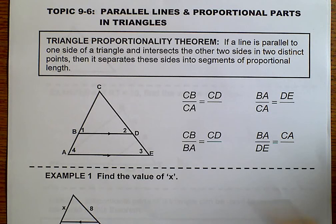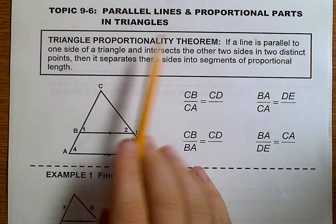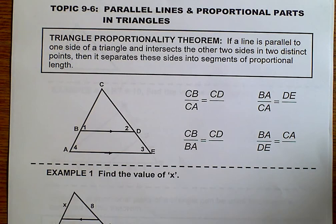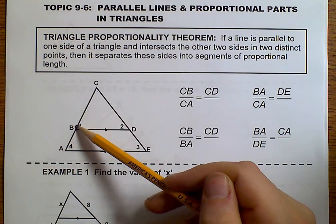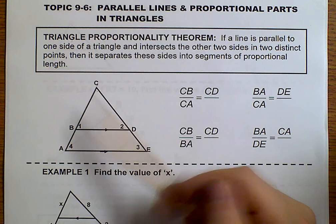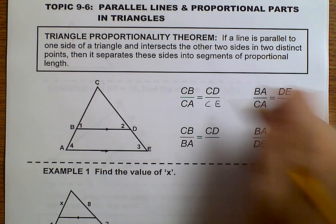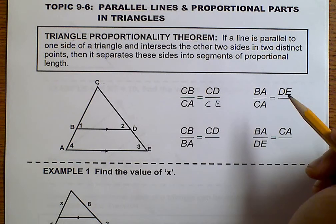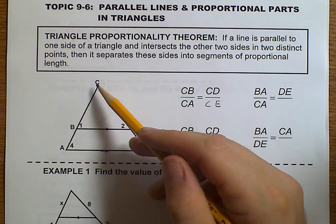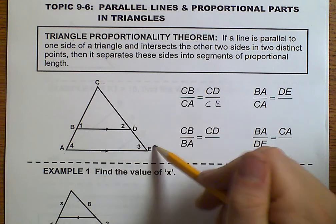We have a triangle proportionality theorem. It says that if a line is parallel to one side of a triangle, it intersects the other two sides in two distinct points. Then it separates these sides into segments of proportional length. So let's go ahead and write down what that actually means. That means that CB relates to CA in the same way that CD relates to CE. We have a proportion here. It also means that BA relates to CA in the same way that DE represents CE.